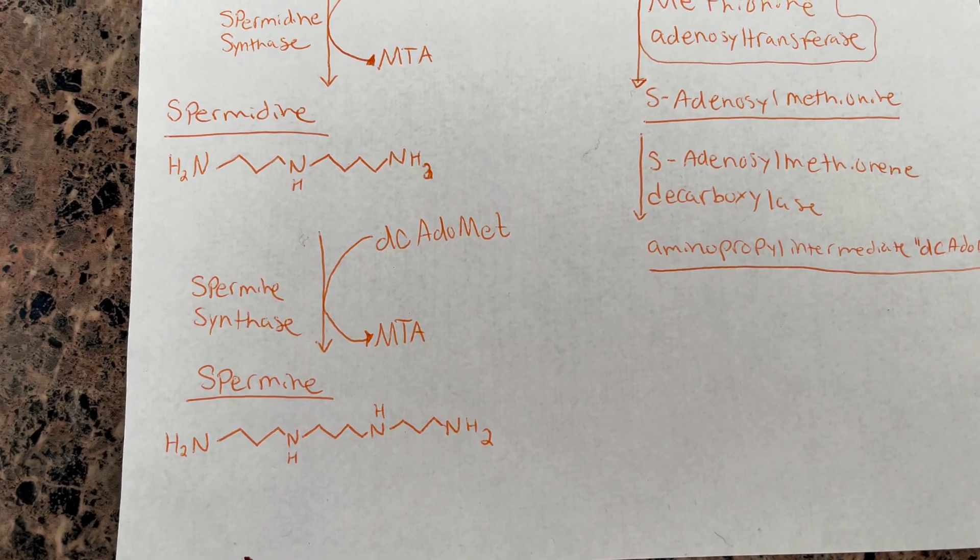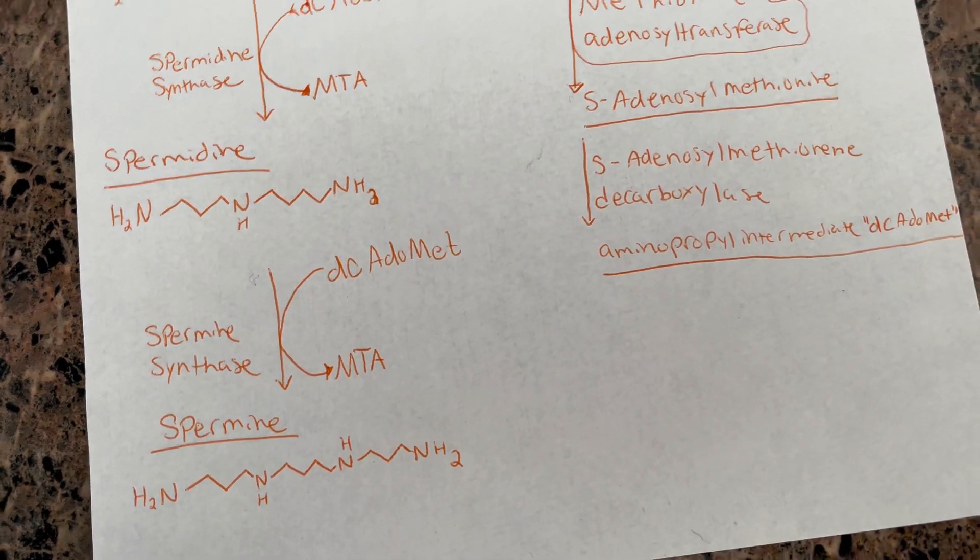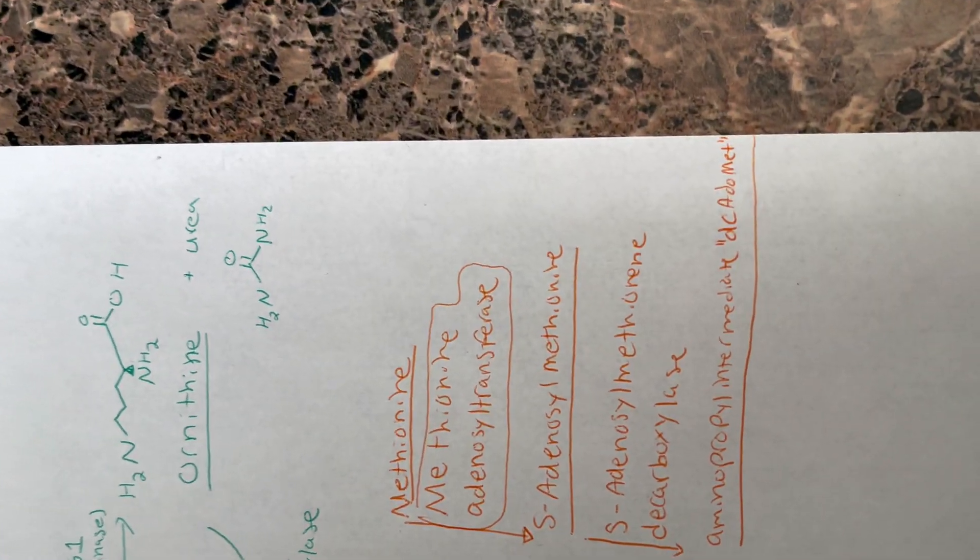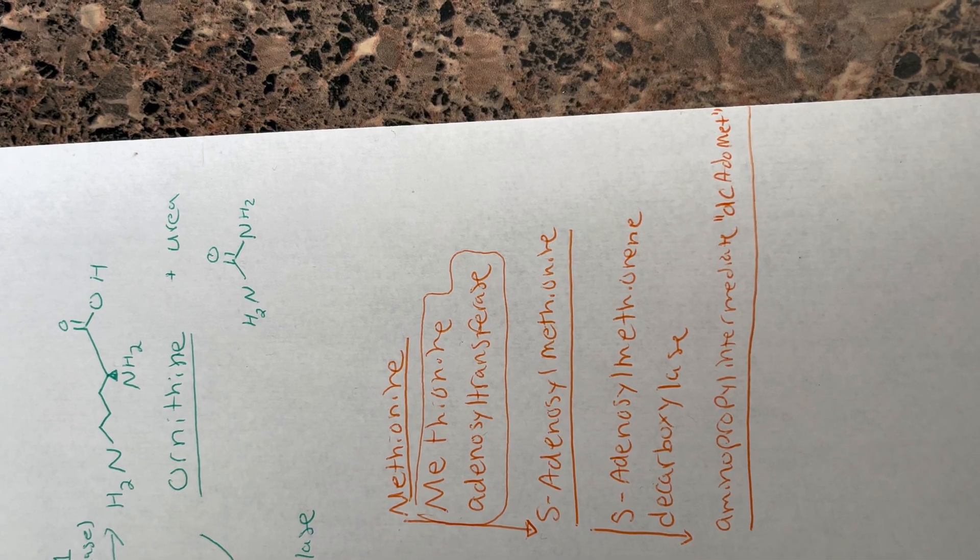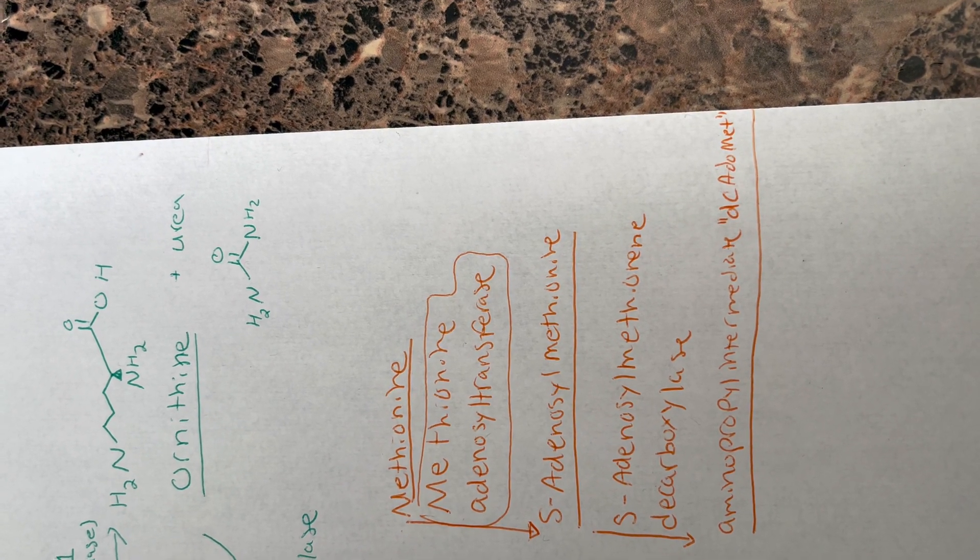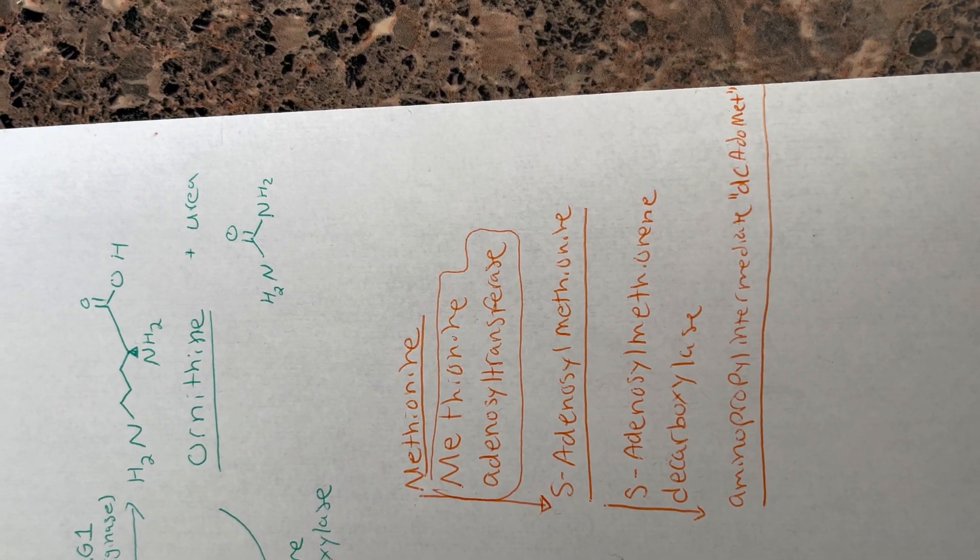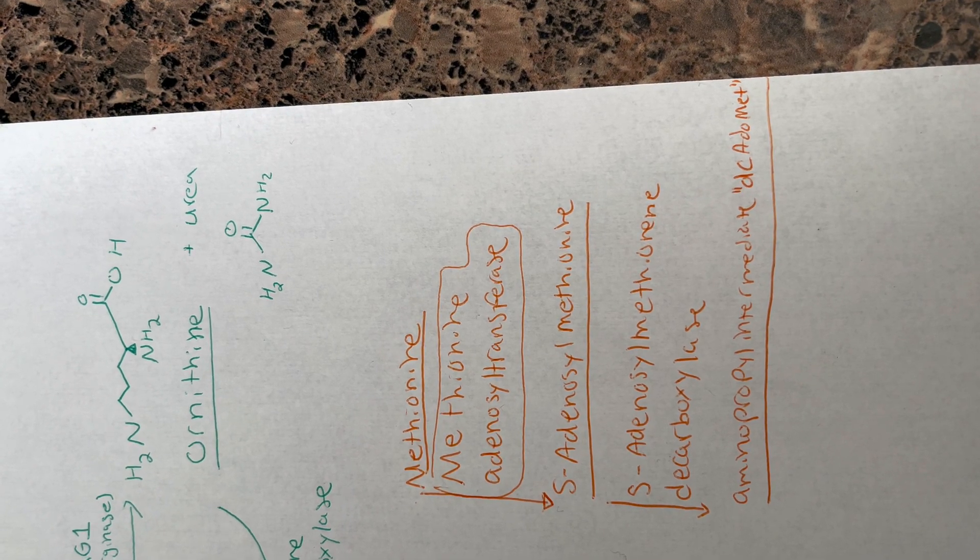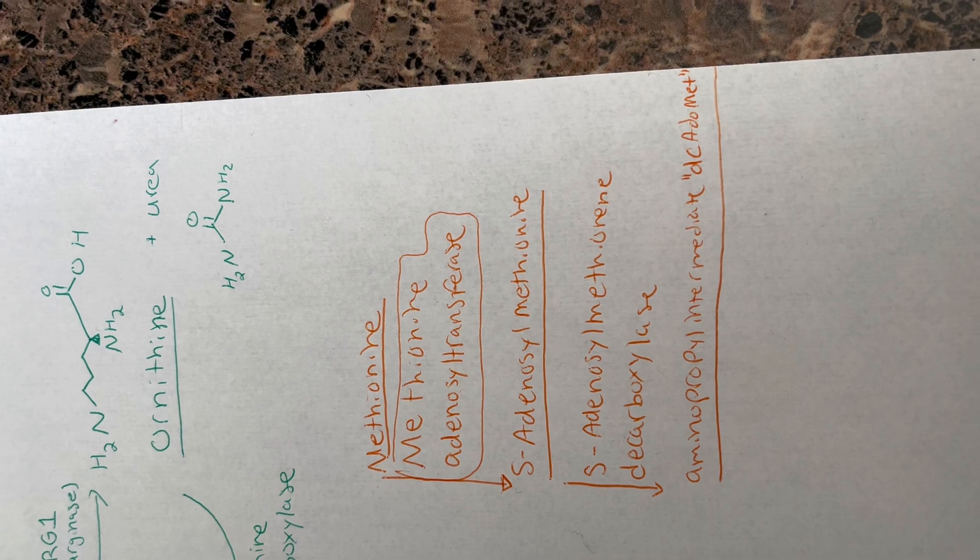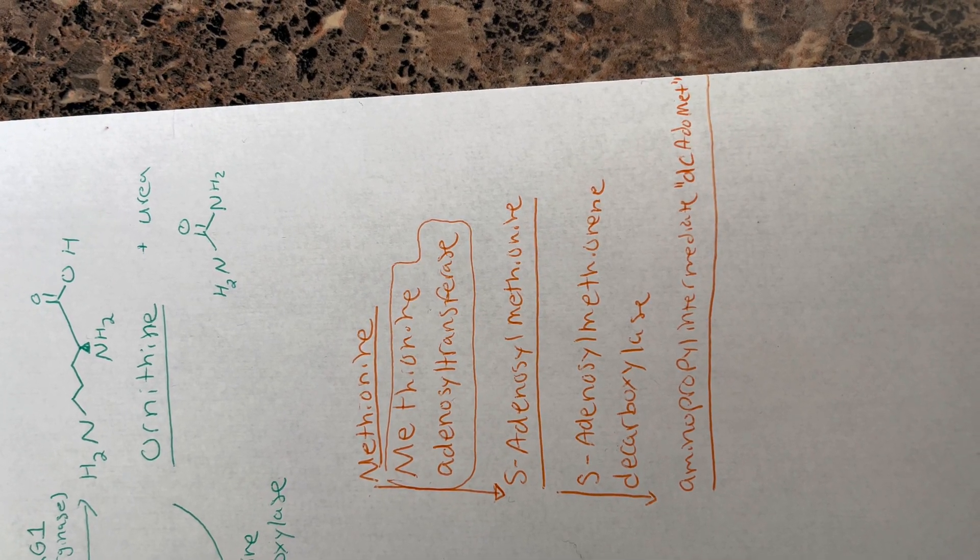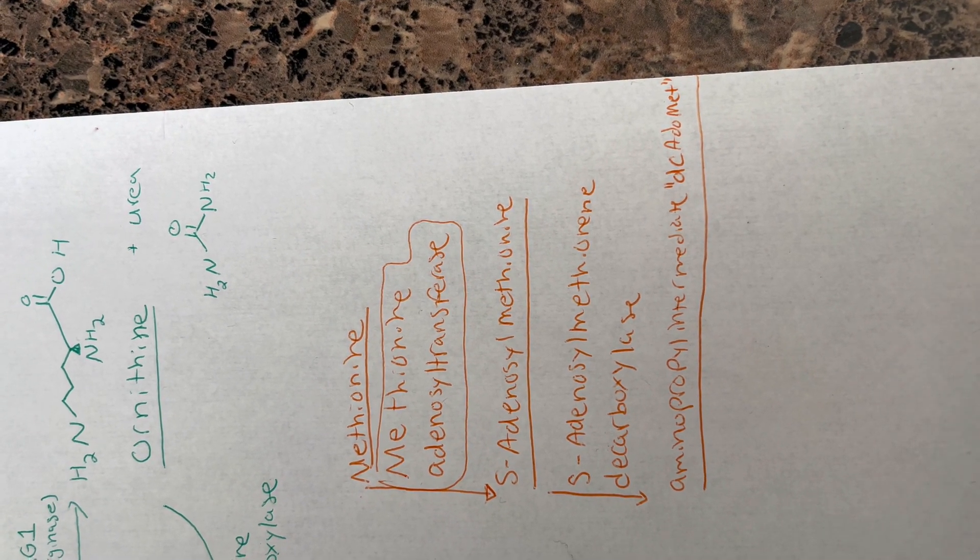Spermidine is further converted to spermine from spermidine synthase. One thing that I do want to cover is the mechanism of methionine adenosyl transferase that transforms methionine to S-adenosyl methionine, which is AdoMet, and that's then decarboxylated by S-adenosyl methionine decarboxylase to form that aminopropyl intermediate.